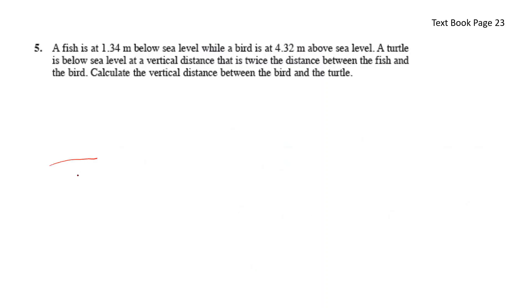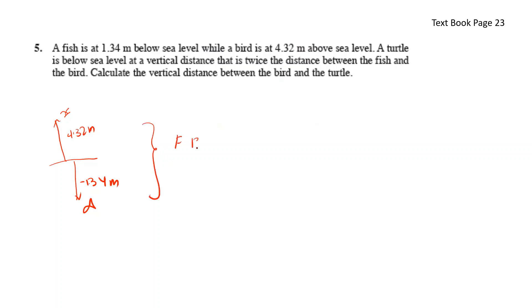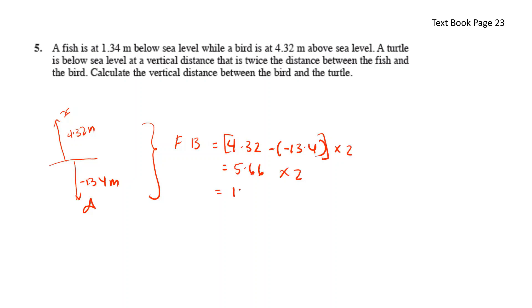A fish is at 1.34 meters below sea level (negative 1.34 m) and a bird is at 4.32 meters above sea level. The distance between the fish and the bird is 4.32 minus negative 1.34, giving 5.66 meters. A turtle is below sea level at twice this distance, so 5.66 times 2 equals 11.32 meters below sea level.